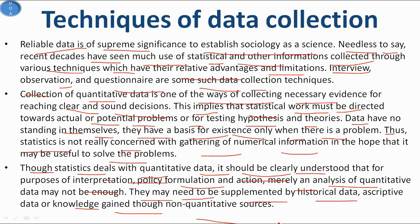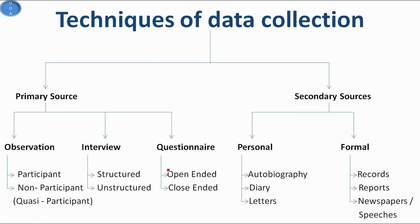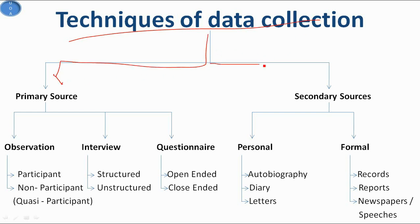Quantitative data may need to be supplemented by historical data, descriptive data, or knowledge gained through non-quantitative sources. At present, theories in sociology use both types of data — quantitative and qualitative. In techniques of data collection, the techniques are divided into two types: primary source and secondary source. In this video we are going to cover only primary sources, and in part two we will cover secondary sources.